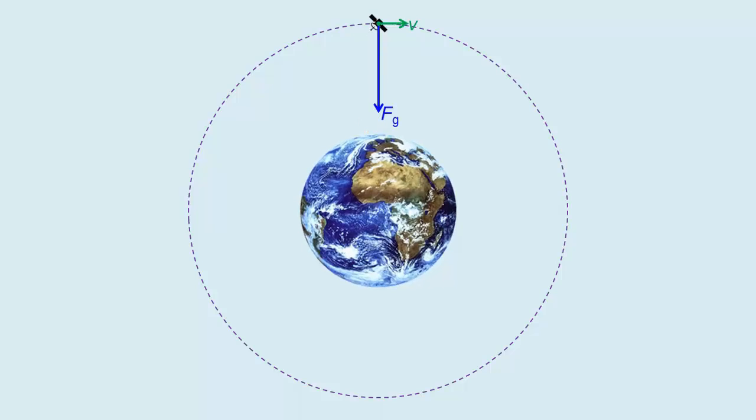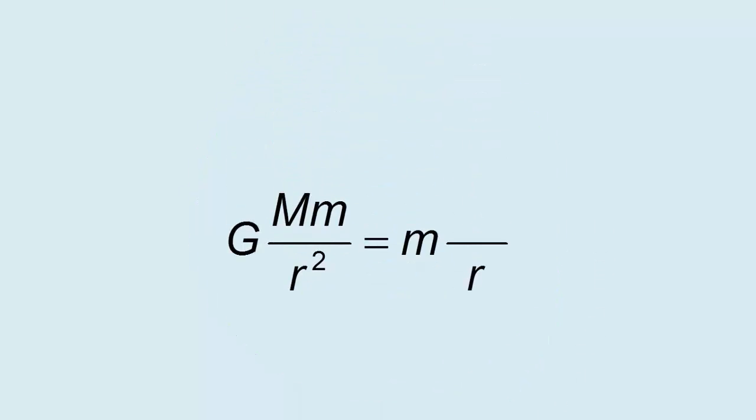You have to give it some tangential speed, maybe a bit more, but not too much, or it will rise up instead. The trick is to give the satellite just the right amount of tangential speed so that the gravitational pull is just enough to provide the required centripetal force for circular motion.